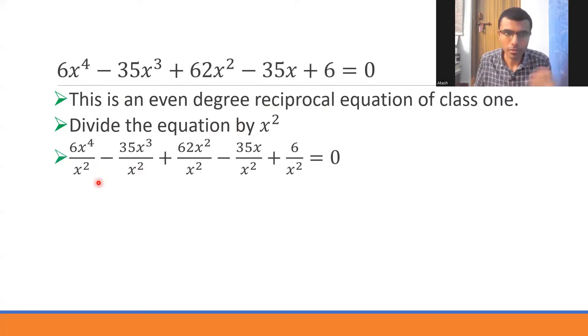So this is what I get: 6x⁴/x². You could cancel 2x and be left with 6x², or use the formula aᵐ/aⁿ = aᵐ⁻ⁿ. So this would be x⁴⁻² = x². Similarly, this would be 35x, here x² cancels, x remains in the denominator, and this is x/x².